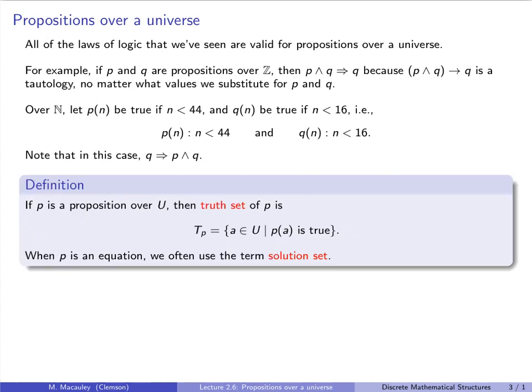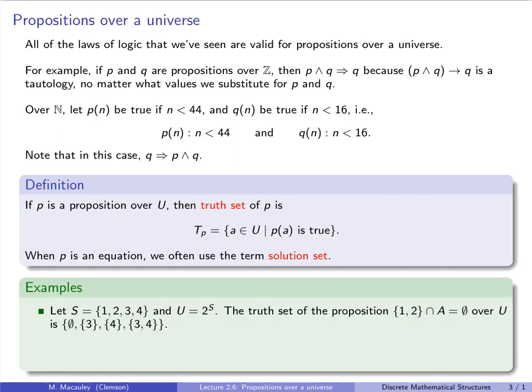Here is a convenient definition. If P is a proposition over a universe U, then the truth set of P is the subset of elements in U for which P(a) is true — in other words, when you substitute them into P, the result is true. When P is an equation, we often use the term 'solution set' instead of 'truth set.' These are things you've seen before, but probably never formalized.